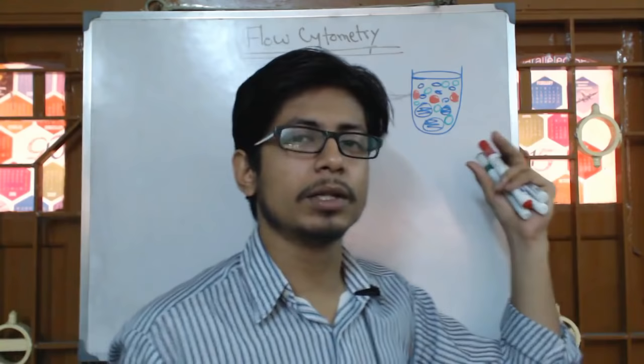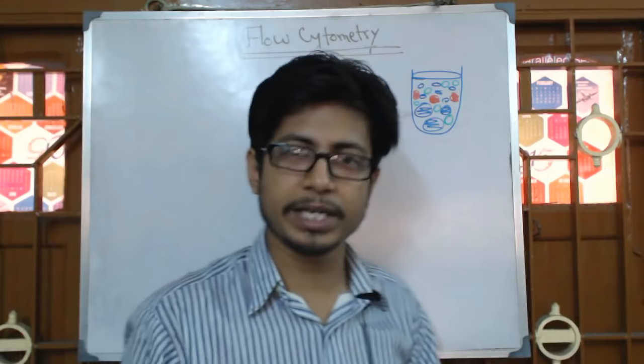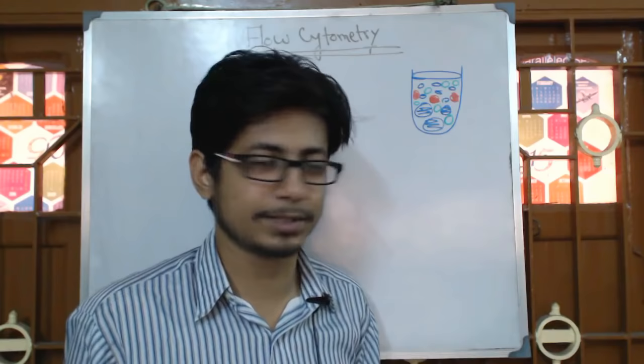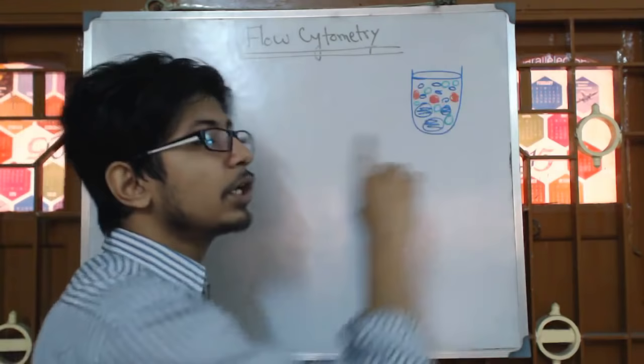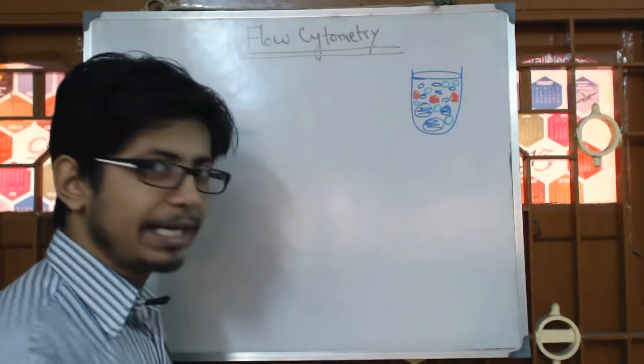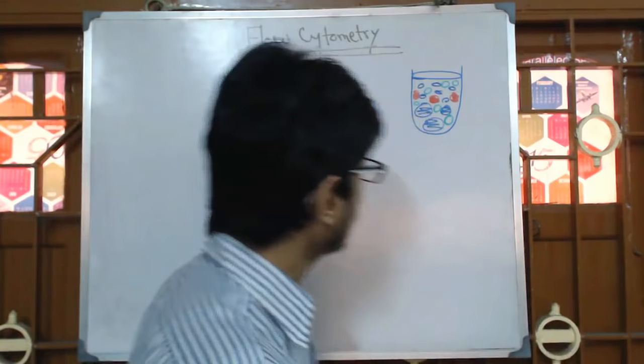What technique do you use to get all this information? If you take this sample and put it under a microscope, it is tedious, time-consuming, and counting all the cells is also very tedious. So we have a technique called flow cytometry which will help us know the number of cells present, including their internal complexity and shape and structure. It is a single technique that tells us so much information about different cells.